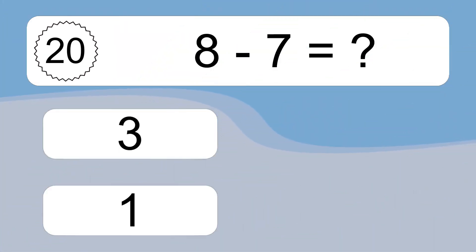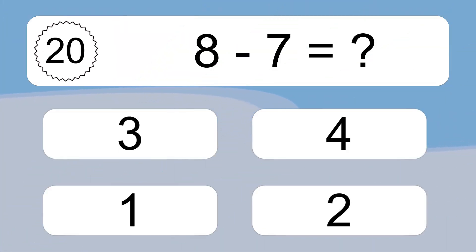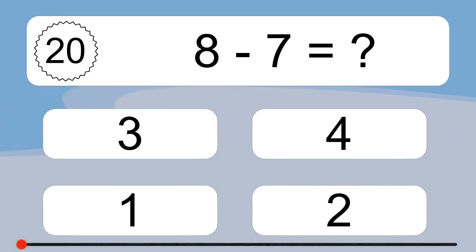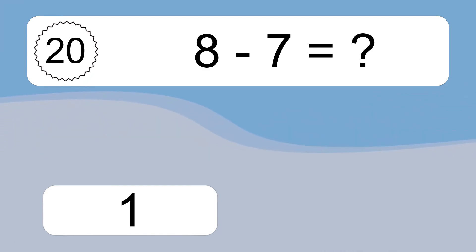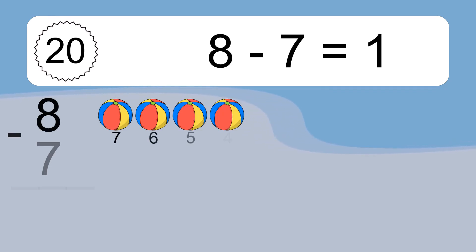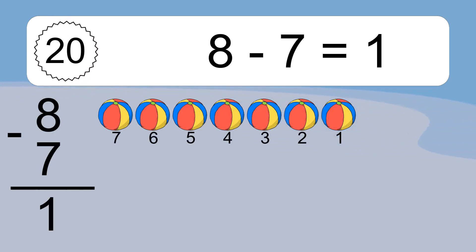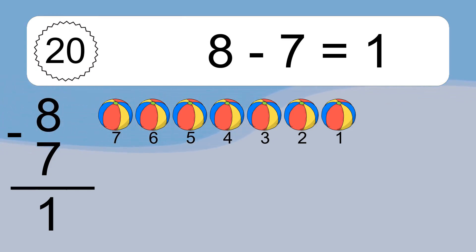8 minus 7 equals what? 8 minus 7 equals 1. Let's count it: 7, 6, 5, 4, 3, 2, 1.